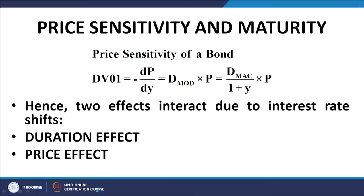If we use the definition of modified duration, we can write DV01 as D_mod times price, because the definition of modified duration is in terms of the percentage change in price corresponding to a unit change in the YTM of the bond. The dP/dY, that is the negative of the slope of the yield-price curve, is given by D_mod times price.